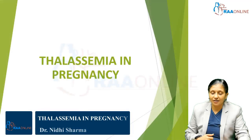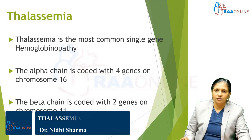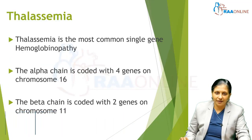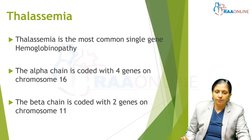Welcome to RAW Online. Today's topic is thalassemia in pregnancy. Thalassemia is the most common single gene hemoglobinopathy. The alpha chain is coded by four genes on chromosome 16, and the beta chain is coded by two genes on chromosome 11.